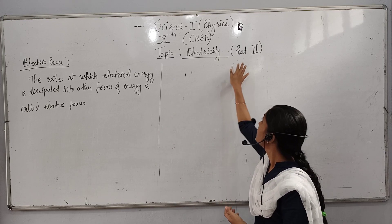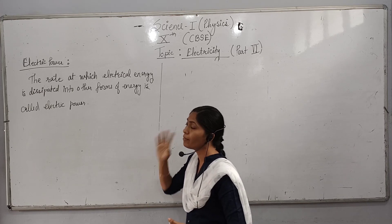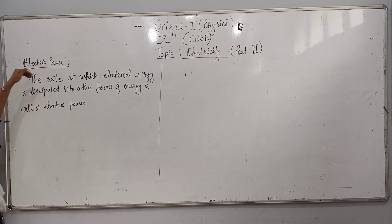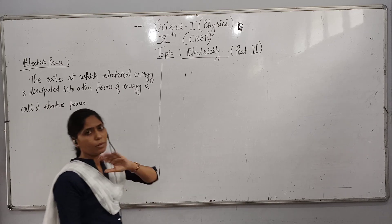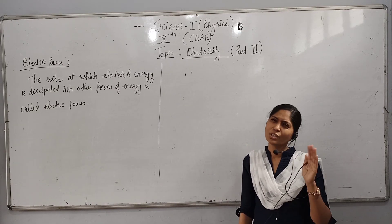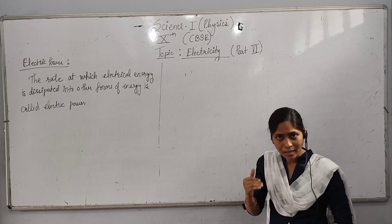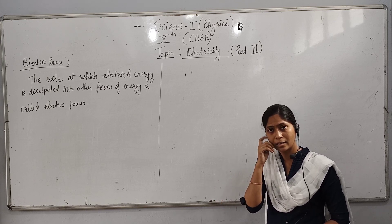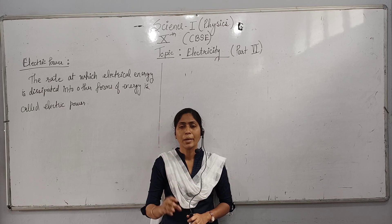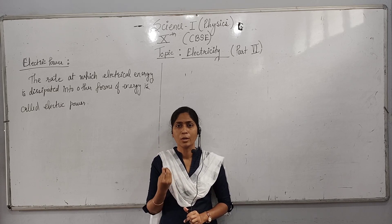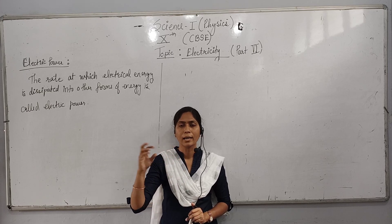Now electric power: the rate at which electrical energy is dissipated into other forms of energy is called electric power. When we look at a meter board in our home, it shows a value in units of kilowatt-hour (kWh). General power is the rate of doing work, and here it is the rate of dissipating electrical energy.